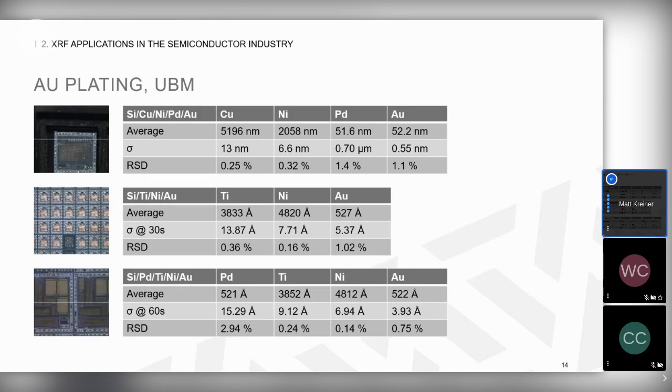Next is the gold plating itself, sometimes measured to understand under bump metallurgy. You can see gold applied to a number of plating stacks in the nanometer and angstrom range. At short measurement times and at these thin levels, an XRF with polycapillary optics provides relative precision of about one percent, which is really quite impressive.